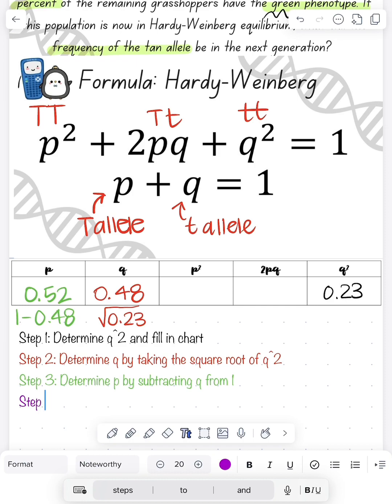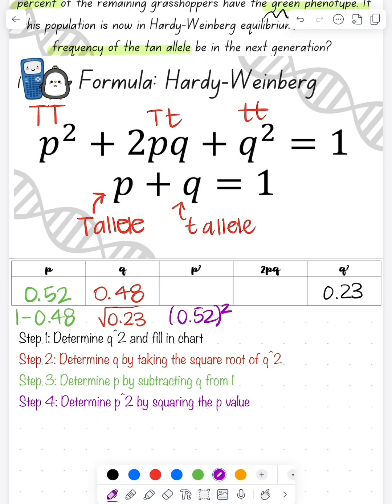Technically we're done, but we're going to keep finishing the chart. So step four is to determine what our p squared is. We know p, so all we have to do is square our p value. So 0.52 squared is going to be 0.27.